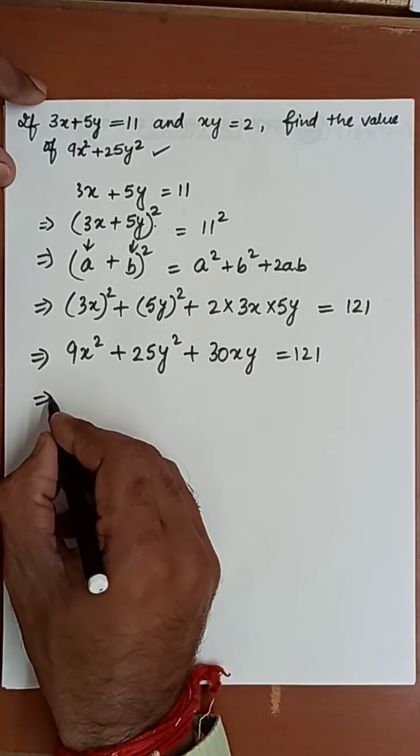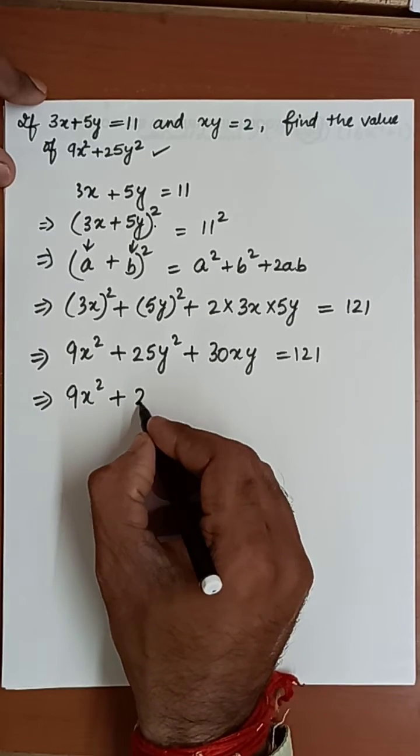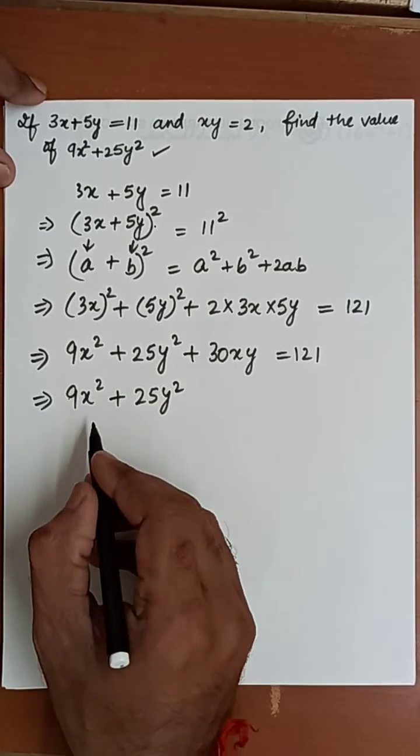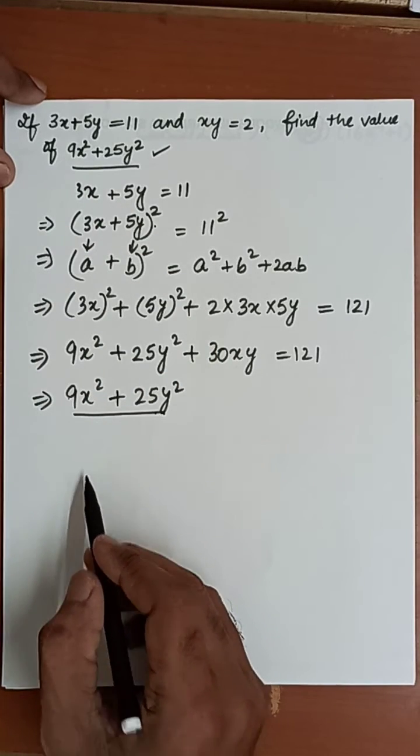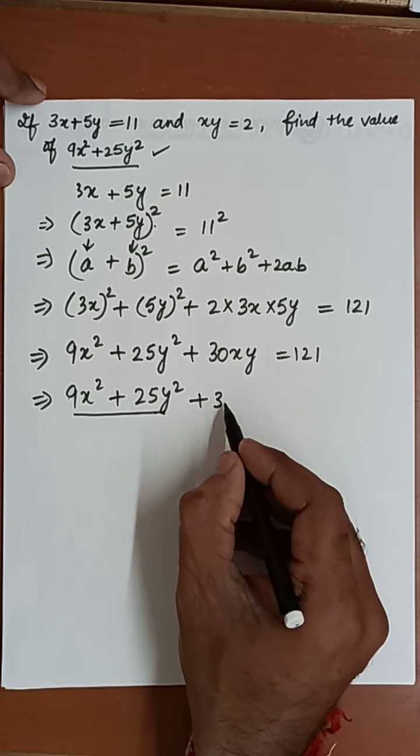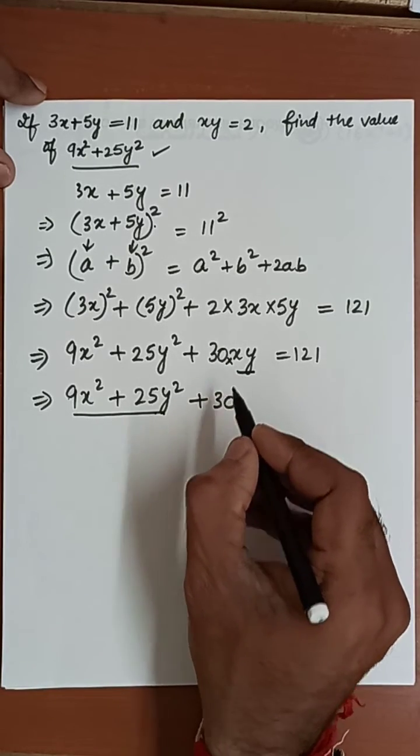2 times 3 is 6, times 5 is 30, times xy equals 121. So 9x square remains the same, 25y square remains the same, because we have to find the value of this.